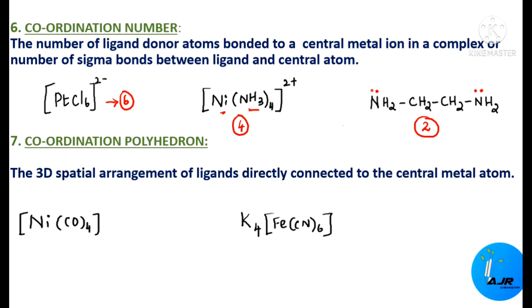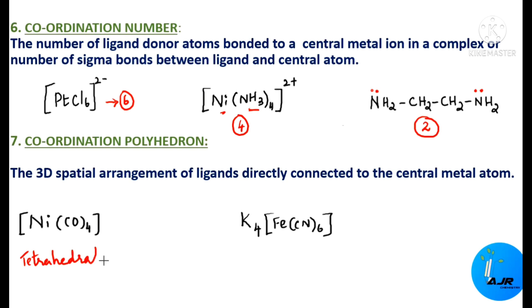Coordination polyhedron is the 3D spatial arrangement of ligands directly connected to the central metal atom. When 4 ligands are attached, the structure is tetrahedral. For K₄[Fe(CN)₆], there are 6 cyanide groups attached, so the structure is octahedral. This 3D arrangement is called the coordination polyhedron.